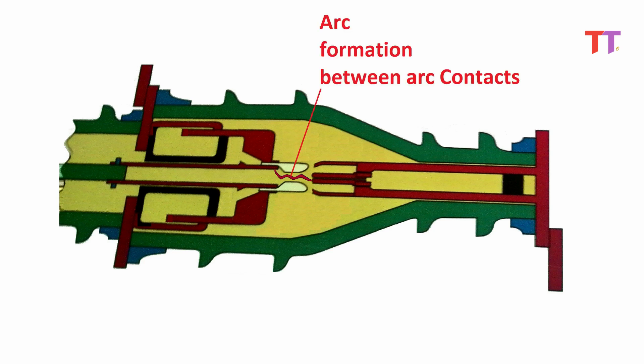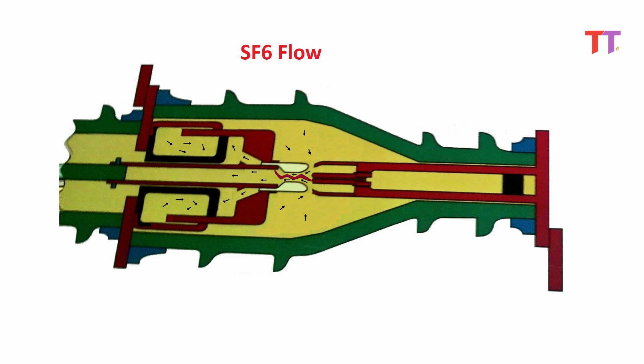Just before closing arc is formed between arcing contacts. Because distance between arc contacts is less than the distance between main contacts, arc contacts being more in length. During this operation, SF6 gas gets accumulated in the region between pistons and main contact.